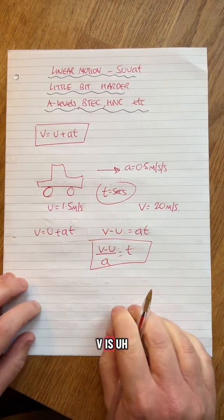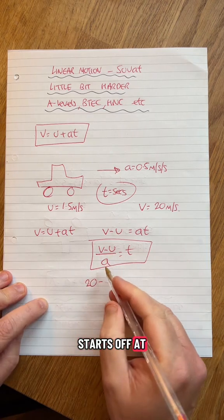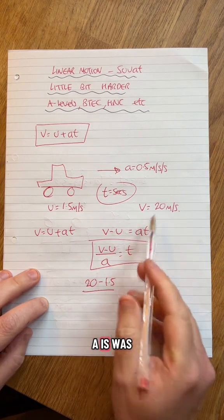So I know V is, what's V? 20. Starts off at 1.5. A is, what's A, 0.5.